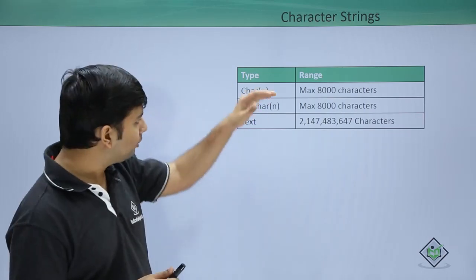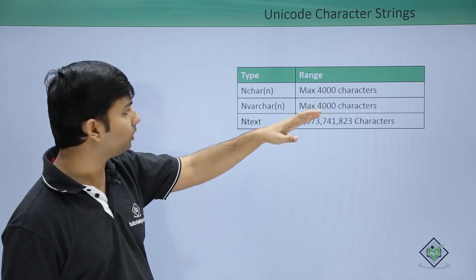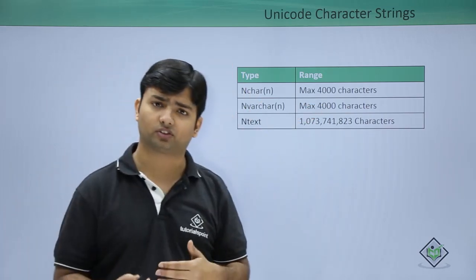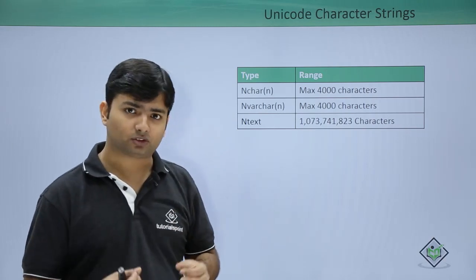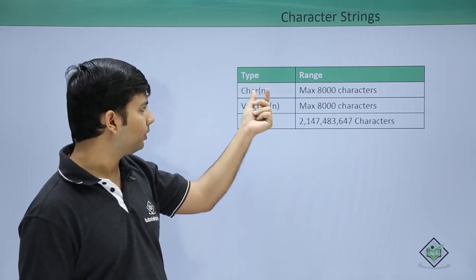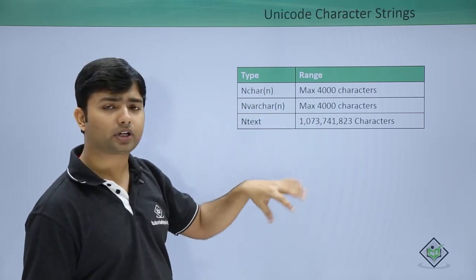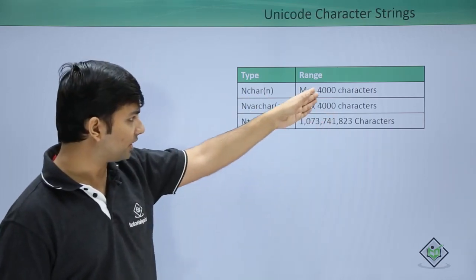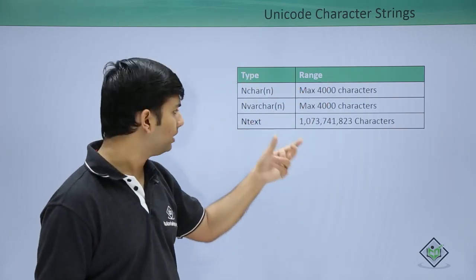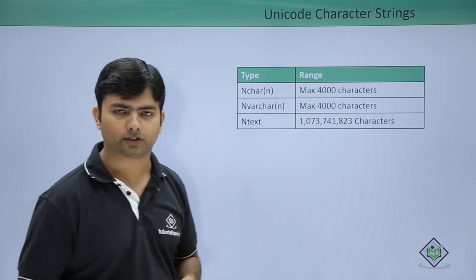In the same pattern, you also get unicode character strings: nchar, nvarchar, and ntext. The behavior is the same, but each character takes two bytes instead of one. So the range is half — 4000 characters for nchar and nvarchar — and similarly the range for ntext is smaller.